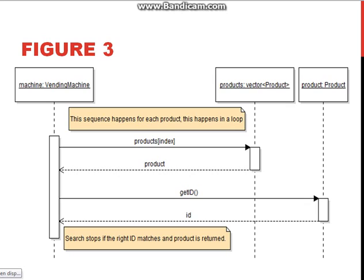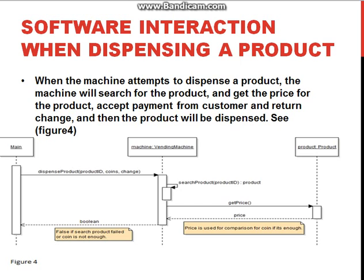When the machine attempts to dispense a product, it searches for the product, gets its price, accepts payment from the customer, and returns change if applicable. The product is then dispensed to the customer and the software restarts. Figure 4 shows the dispensing process sequence diagram.